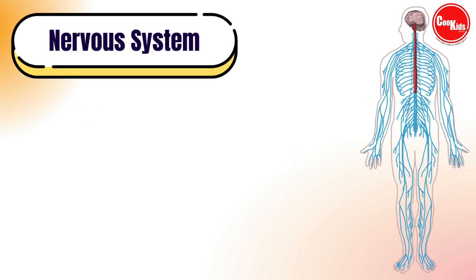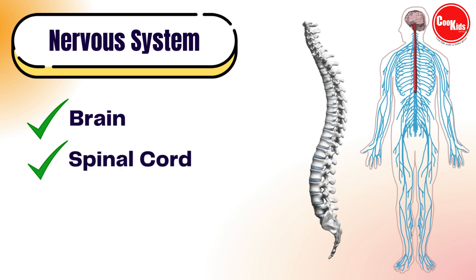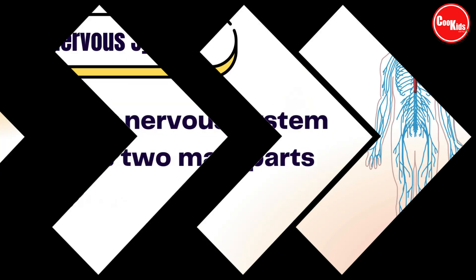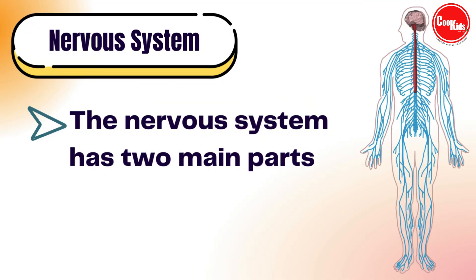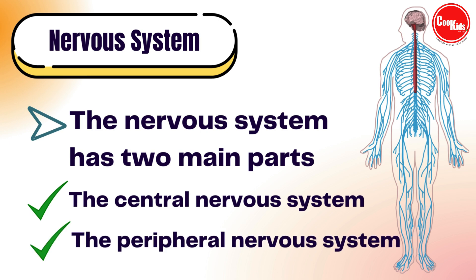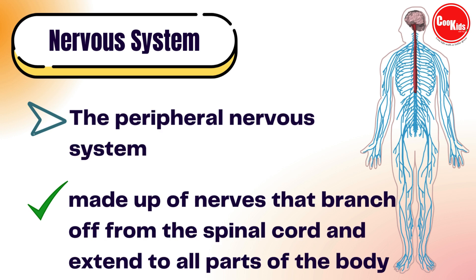The nervous system consists of the brain, spinal cord, and the nerves. It has two main parts: the central nervous system and the peripheral nervous system. The central nervous system is made up of the brain and spinal cord. The peripheral nervous system is made up of nerves that branch off from the spinal cord and extend to all parts of the body.